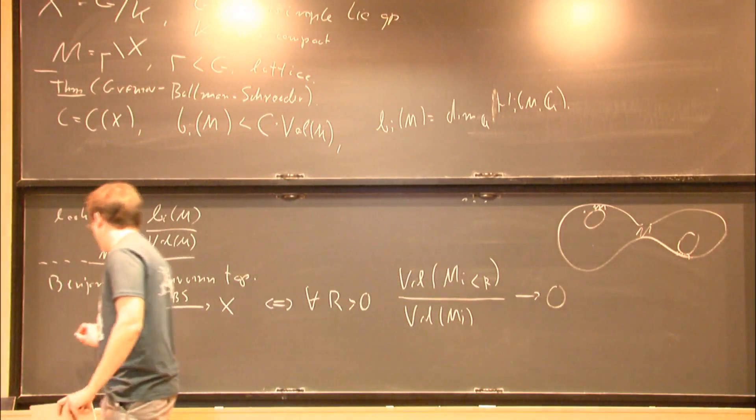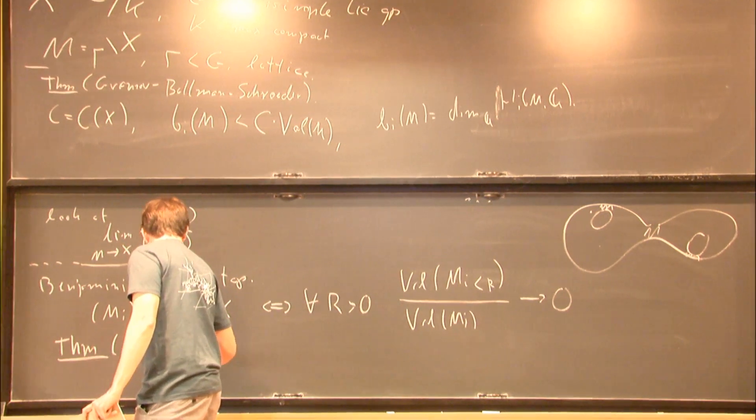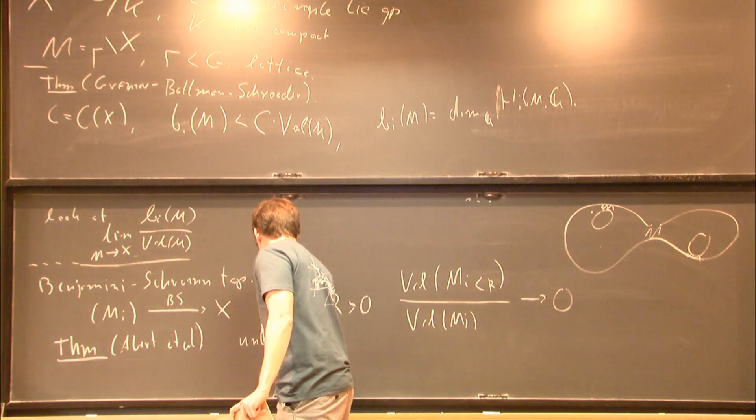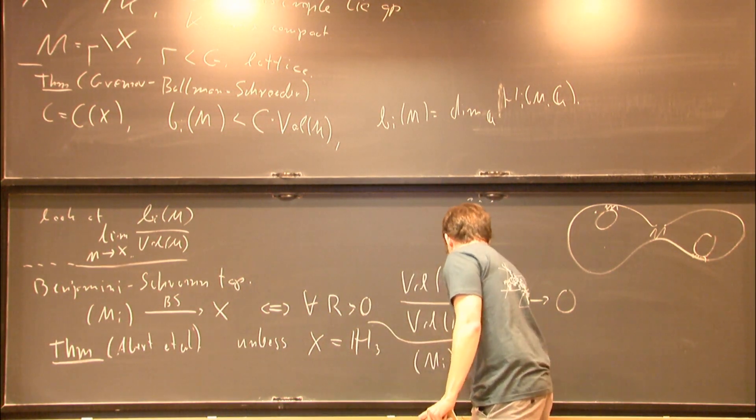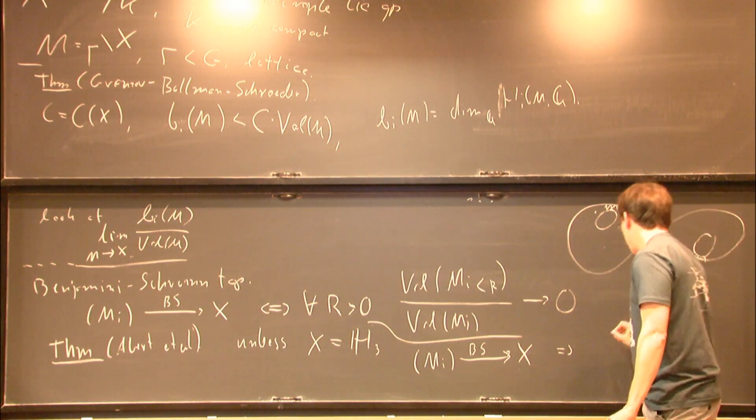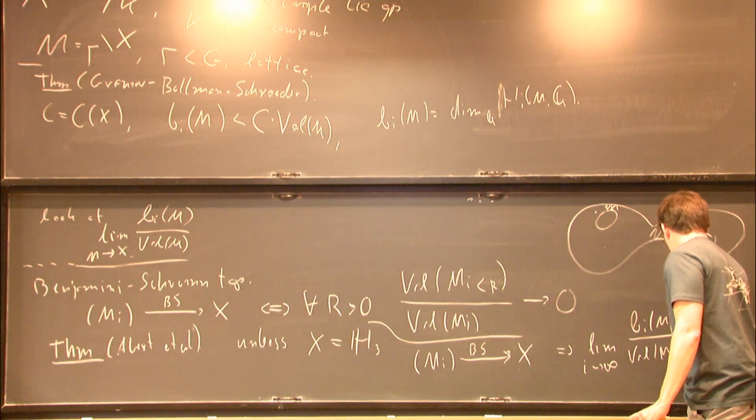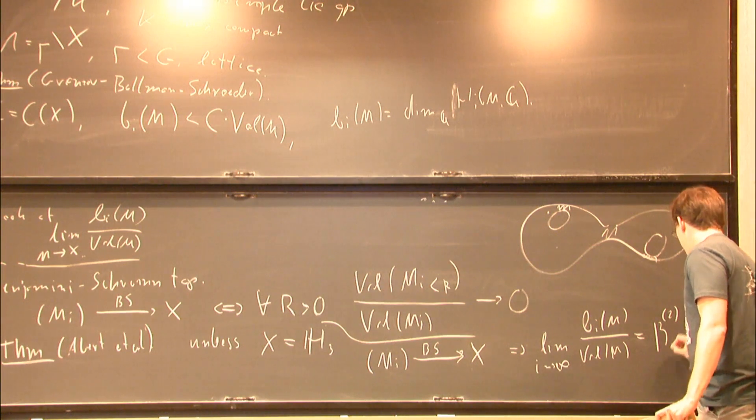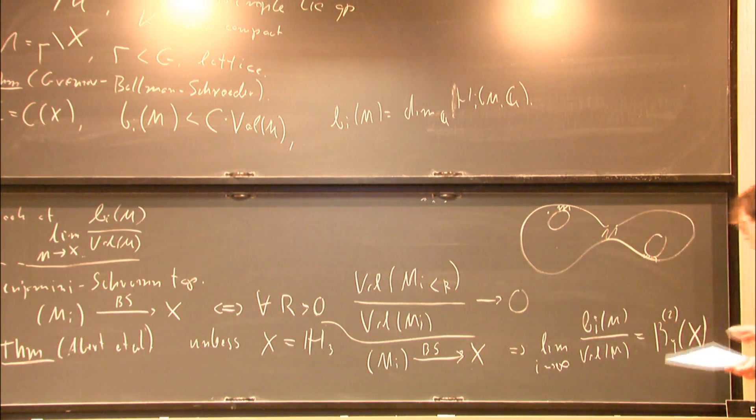This is a theorem of Abert, Bergeron, Biringer, and Gelander, that unless our symmetric space is equal to H3, then this Benjamin-Schramm convergence implies that normalized Betti numbers converge, and they converge to something called L2 Betti numbers that depends only on the symmetric space X and is computable. So we know those values. That's what happens for Betti numbers over the rationals.